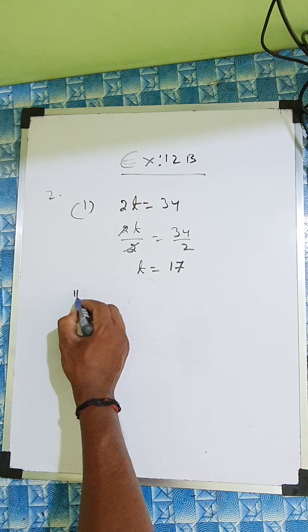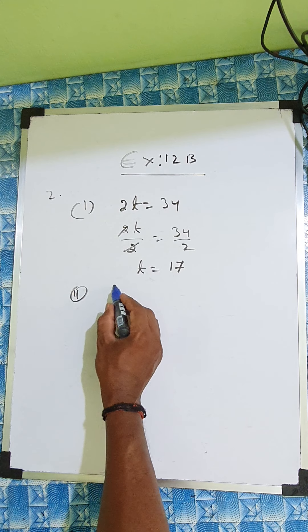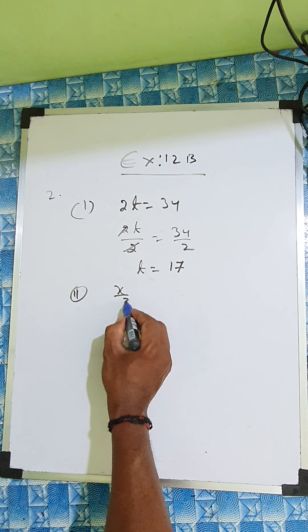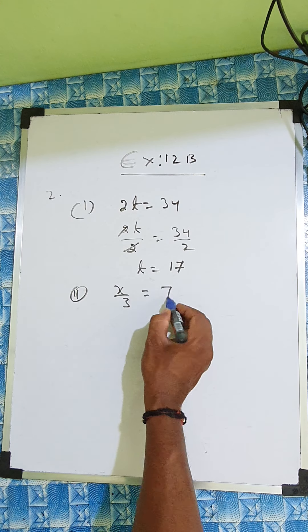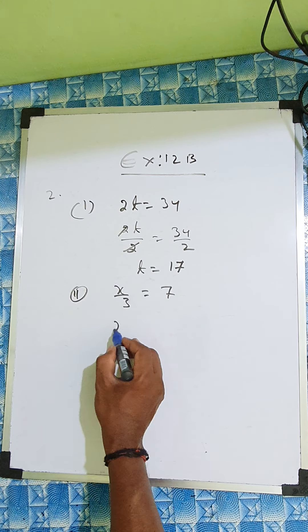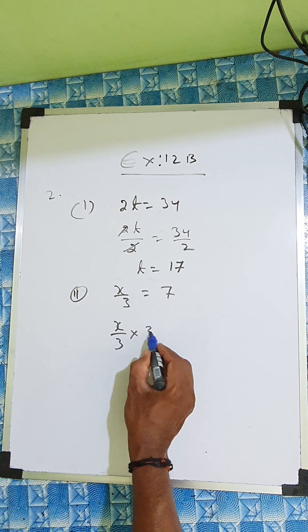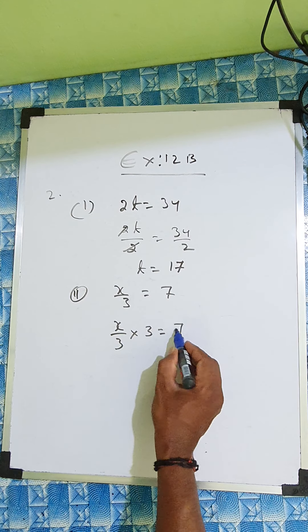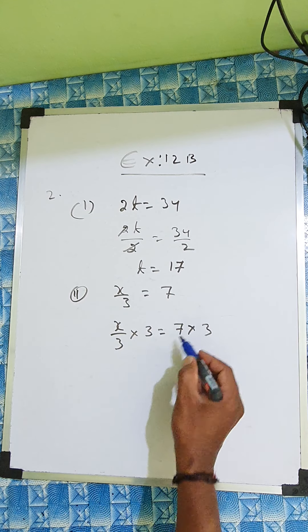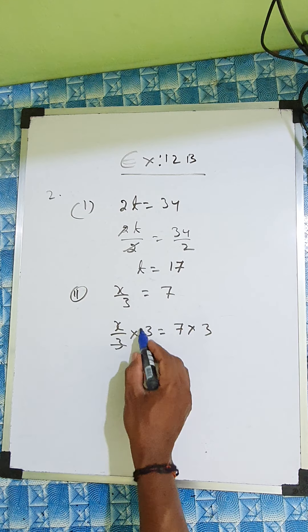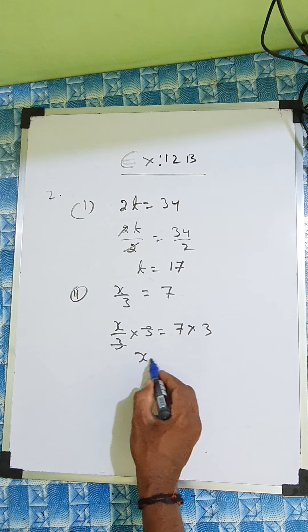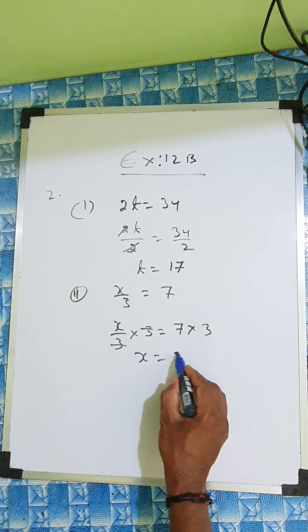See the next one: x by 3 equal to 7. So this is division here, so what you'll do is multiply. 7 into 3 — so 3 and 3 cancel, x equal to 7 times 3, which is 21.